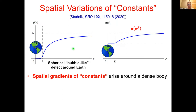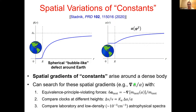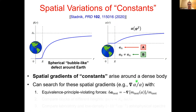If these spherical bubble-like defects surround Earth, we would expect spatial variations and gradients in fundamental constants around Earth — for example, in the value of alpha. Inside Earth and close to the surface we expect one particular value of alpha, and as we move away from the surface we tend toward a different value of the fine structure constant. We can look for these spatial gradients in a variety of different ways.